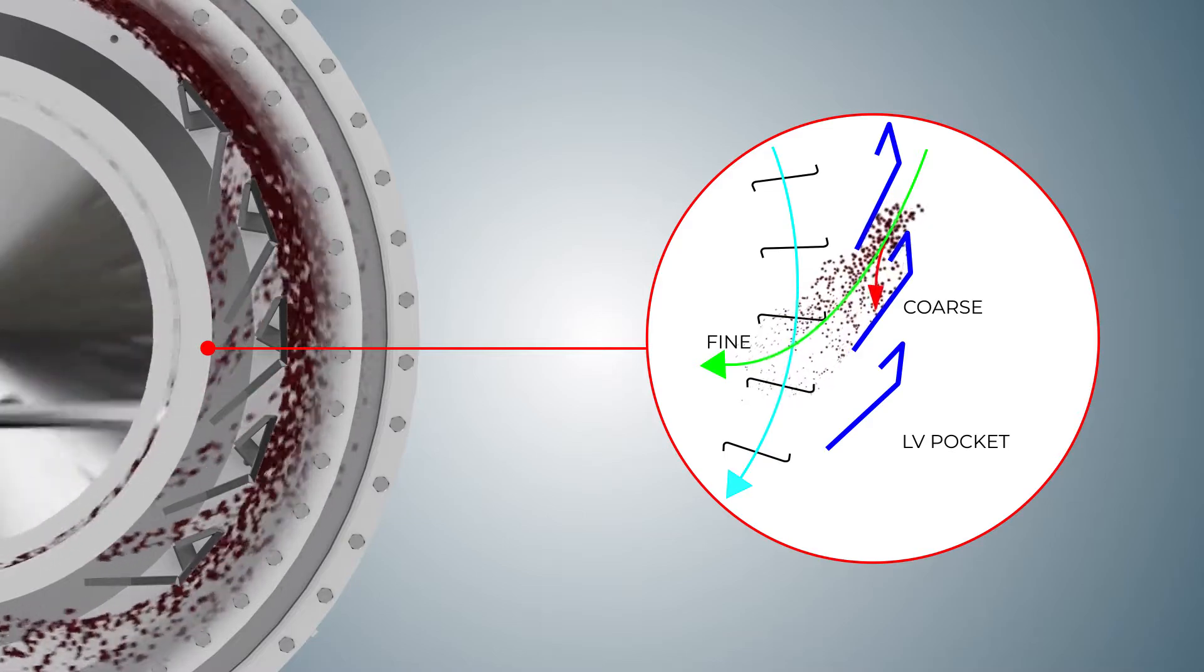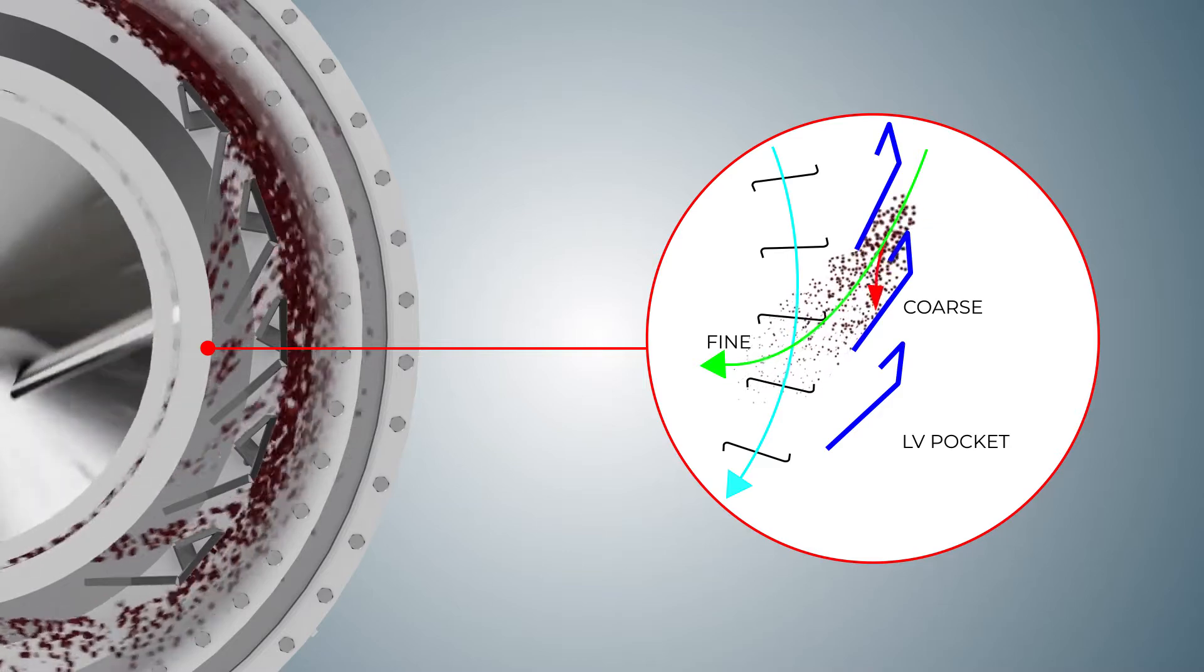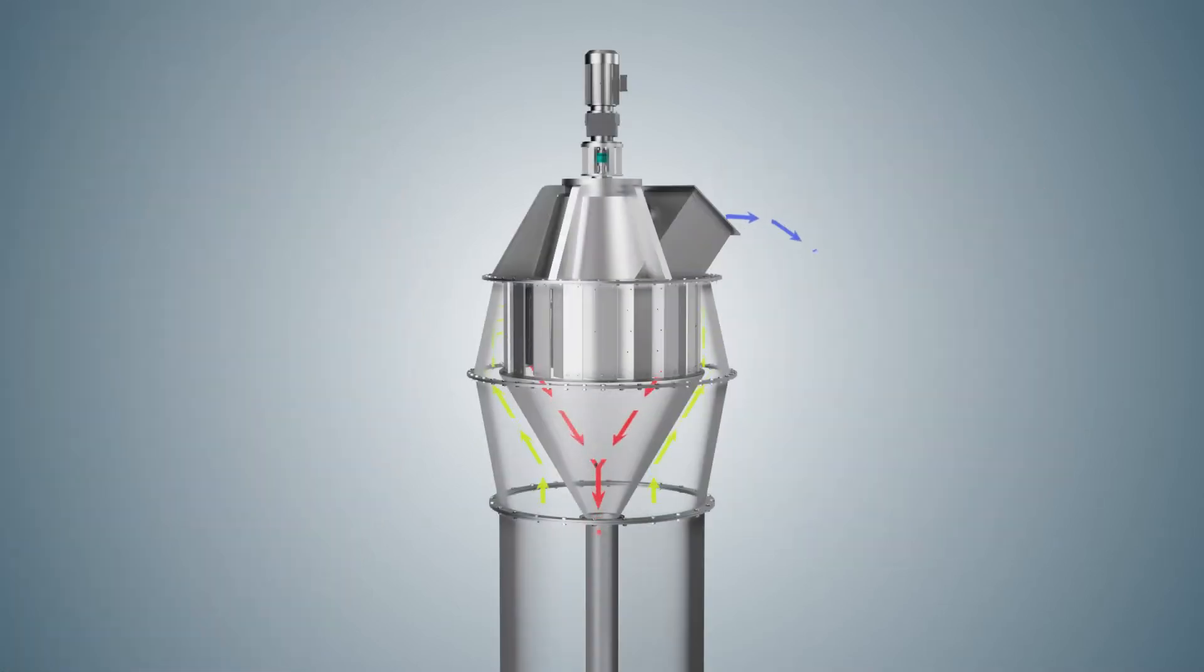The system first rejects oversized particles with pocket guide veins, then further screens coarse particles with a separator rotor.